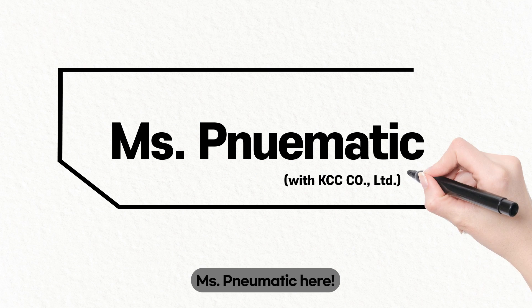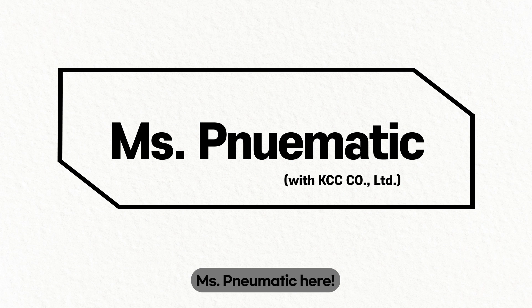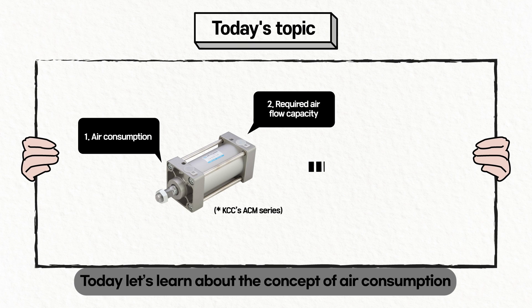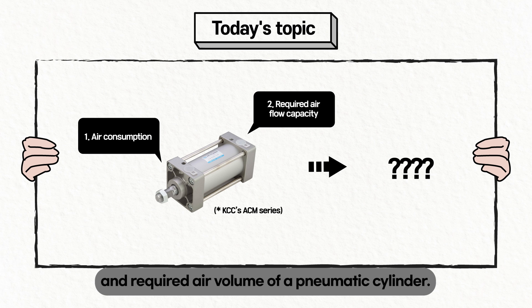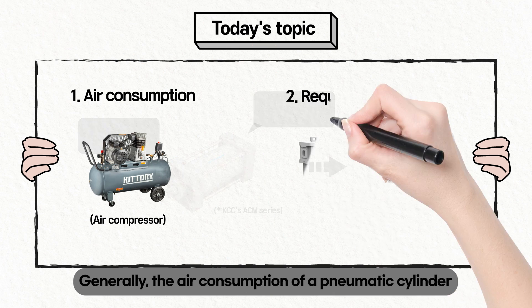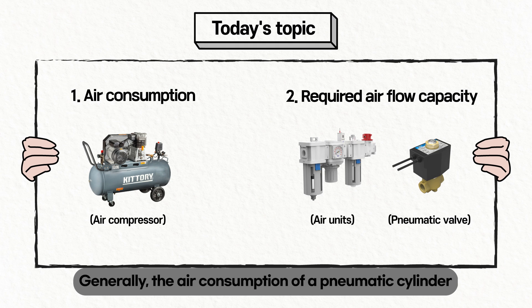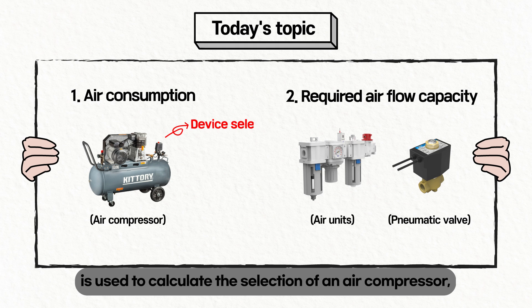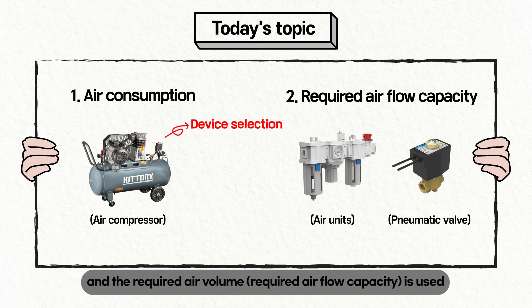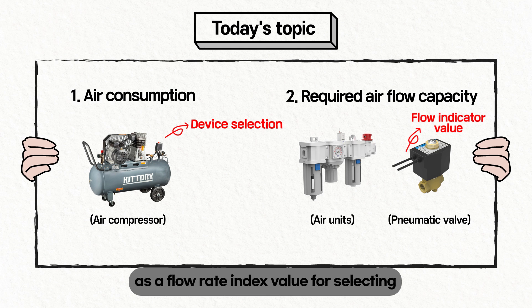Hello everyone, this is Nomadic. Today let's learn about the concept of air consumption and required air volume of a pneumatic cylinder. Generally, the air consumption of a pneumatic cylinder is used to calculate the selection of an air compressor, and the required air volume is used as a flow rate index value for selecting filter, regulator, lubricator, or pressure booster valves.